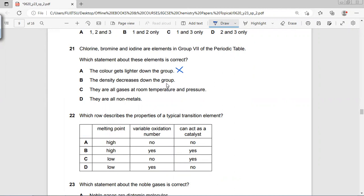They are all gases at room temperature? No, we surely know that bromine is liquid and iodine is solid. They are all non-metals? Yes, they are.